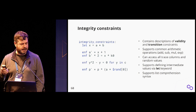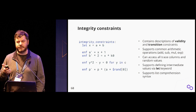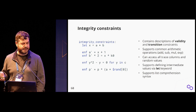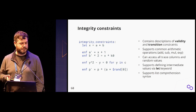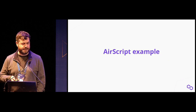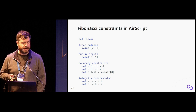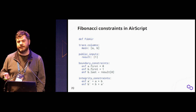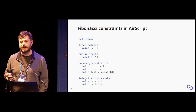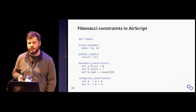You can define intermediate variables and reuse them. We also support simple list comprehension—for example, since C refers to four columns and we want to enforce that values in those columns are binary, we can use Python-like syntax saying 'for every column c in C, enforce c squared minus c equals zero,' rather than repeating the constraint four times. Here is the complete AirScript file for the Fibonacci sequence: a single main trace with two columns, one public input for the result, the boundary conditions, and the transition constraints.